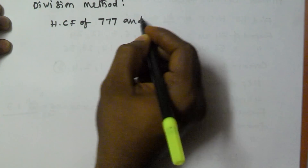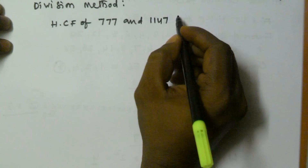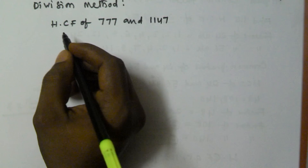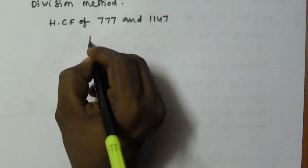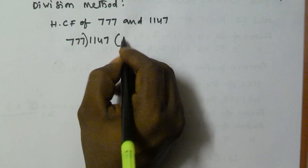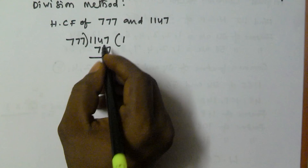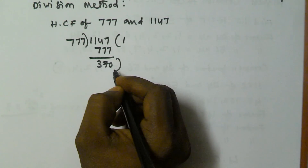Now we will see the division method. Let's find the HCF of 777 and 1147 using the division method. In the division method, we divide the bigger number by the smaller number. So we divide 1147 by 777, and after subtraction we get a remainder of 370.